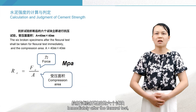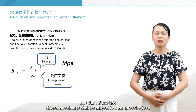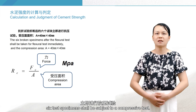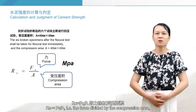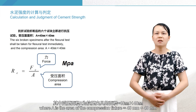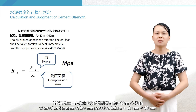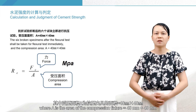Immediately after the flexural test, six test specimens shall be subject to a compressive test. The formula is RC equals FC divided by A — that is, the force divided by the compression area — where A is the area of the compression fixture, 40 mm by 40 mm.